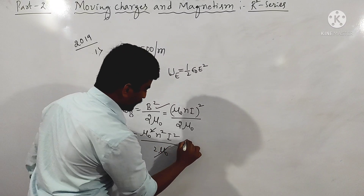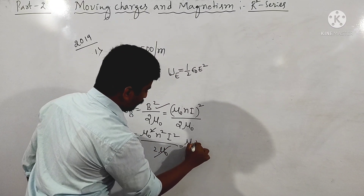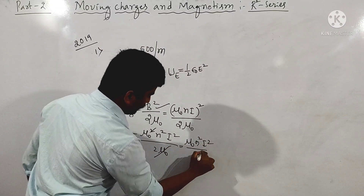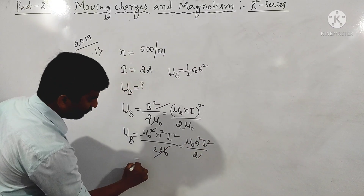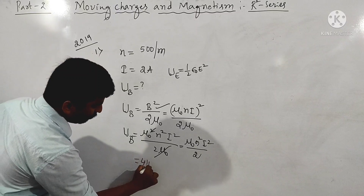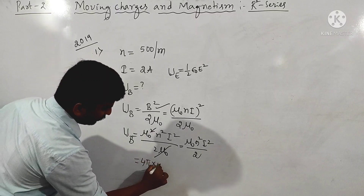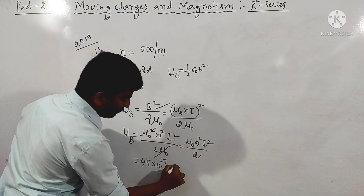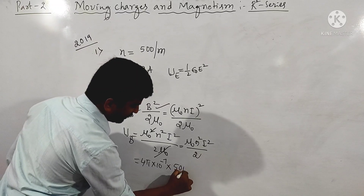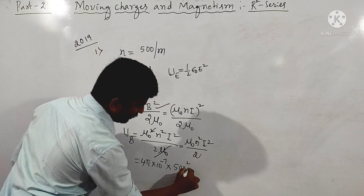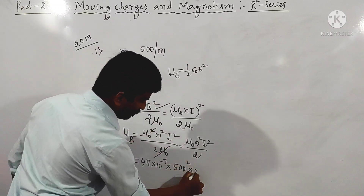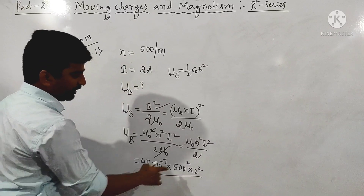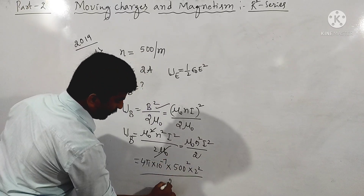This becomes mu naught n squared i squared divided by 2. Substituting the value of mu naught as 4 pi into 10 to the power of minus 7, n = 500, and i = 2, we compute the magnetic energy density.